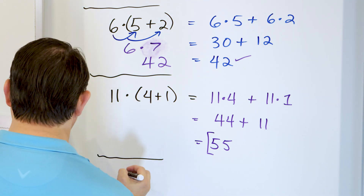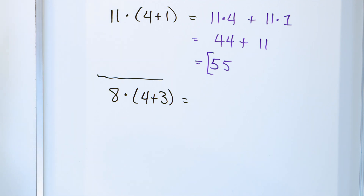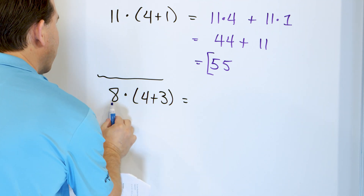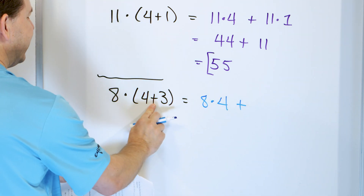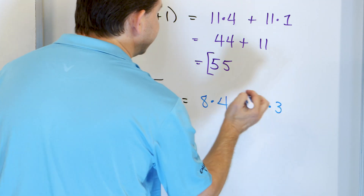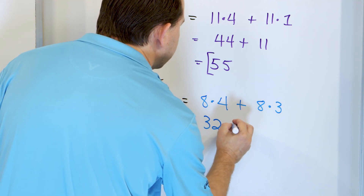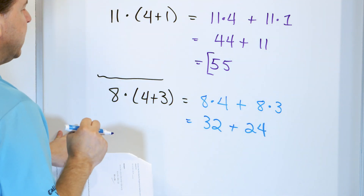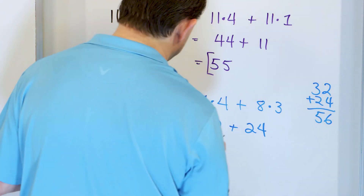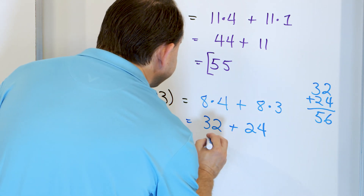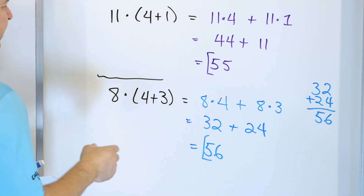Just a few more. Let's take a look at 8 times (4 plus 3). The 8 gets distributed in times the 4 and times the 3, giving 8 times 4, plus 8 times 3. 8 times 4 is 32, and 8 times 3 is 24. Adding 32 and 24: you get 56. If you check it: 4 plus 3 is 7, and 7 times 8 is 56. Correct.